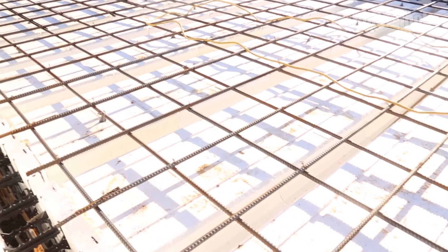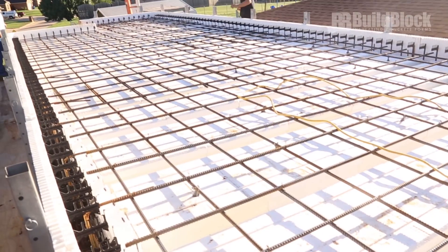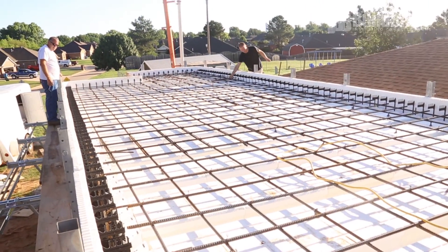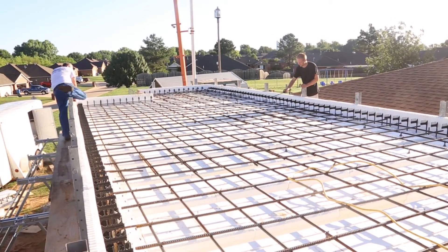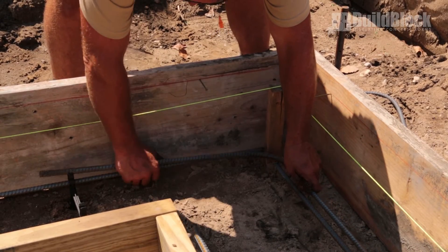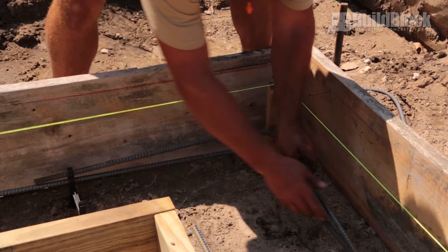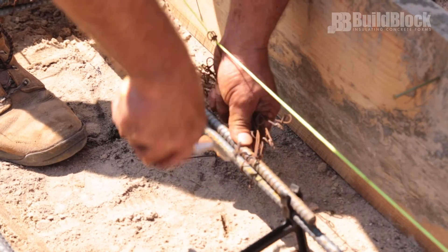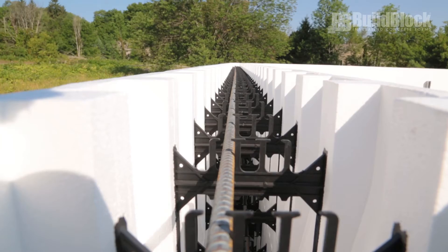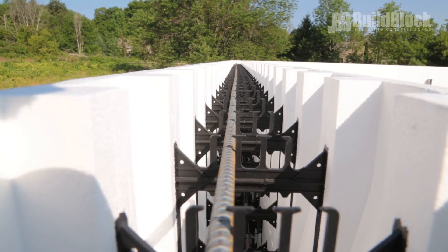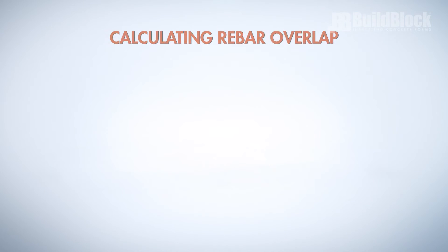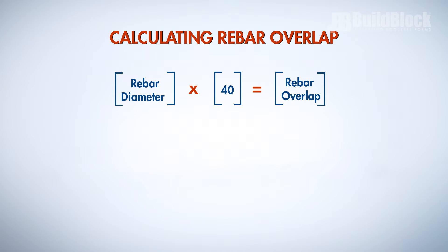To make concrete strong, rebar must be continuous. Shorter pieces of rebar may be spliced together throughout the ICF wall. A contact lap splice is when rebar touches and is tied together. This can be tied with wire or locked together by a holder such as the web fingers in an ICF web. When calculating the appropriate amount of overlap for connecting rebar, multiply the rebar diameter by 40.